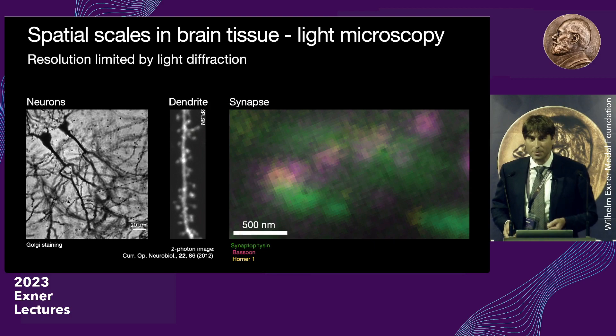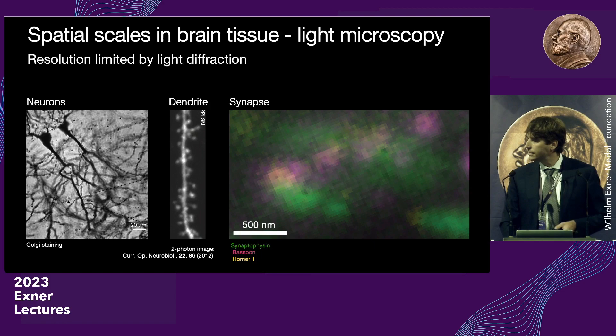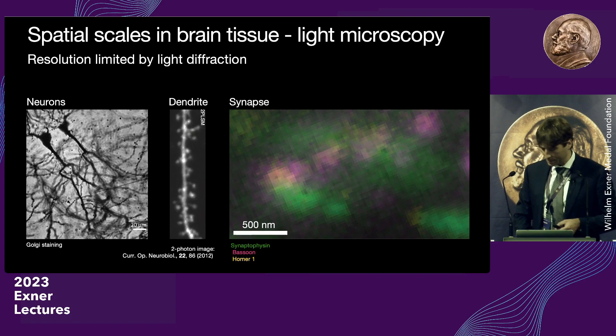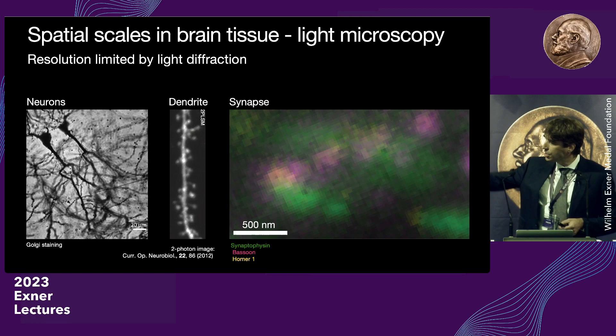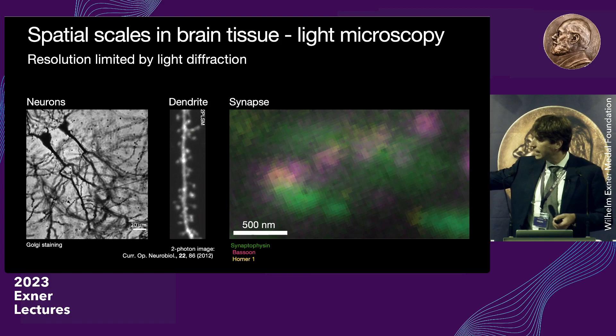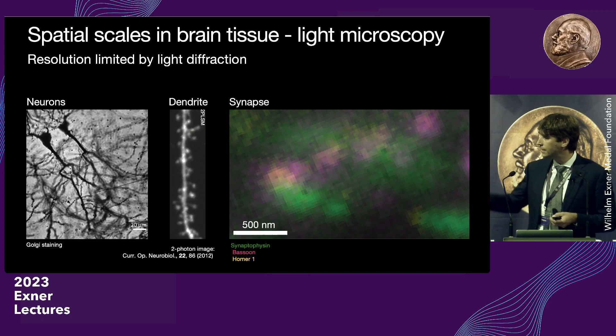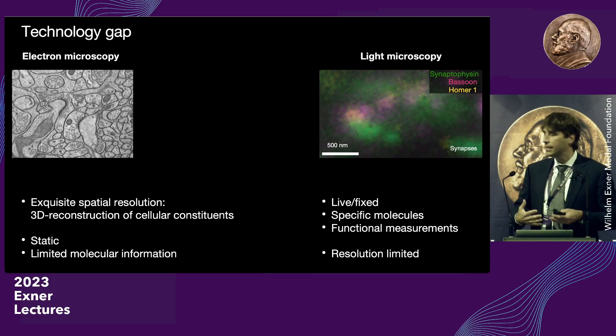As Ed introduced, light microscopy is very good at visualizing individual cells, like individual neurons. But already when you start zooming into the structures that collect signals from other cells — the dendrites, the antenna of the neurons — it starts being a bit blurry. Each of these little dots bears one synapse, and when we zoom in further on the scale of individual synapses, the scale bar is just a few hundred nanometers.